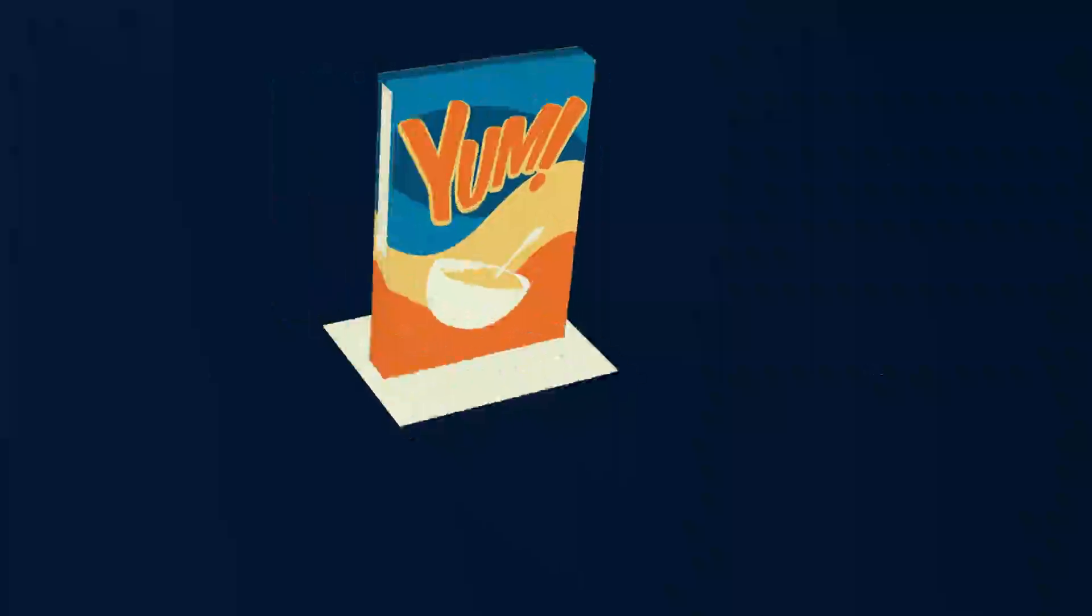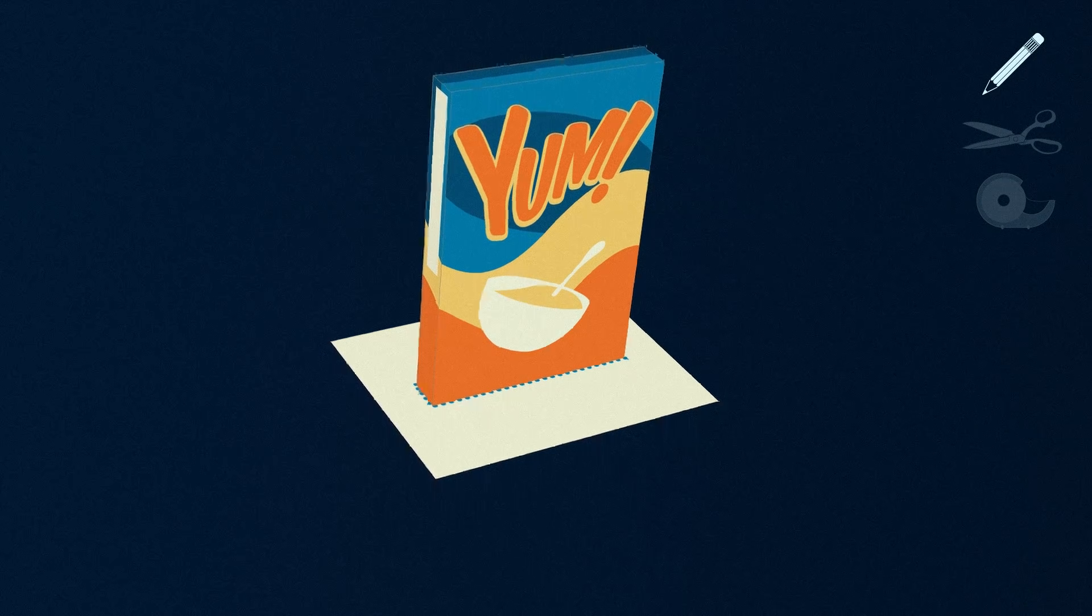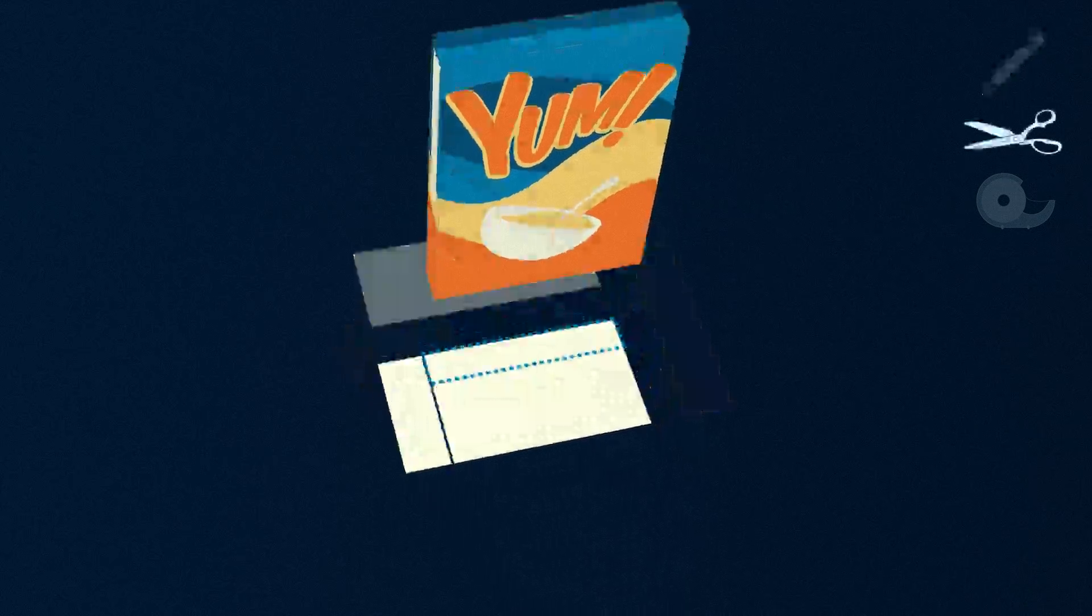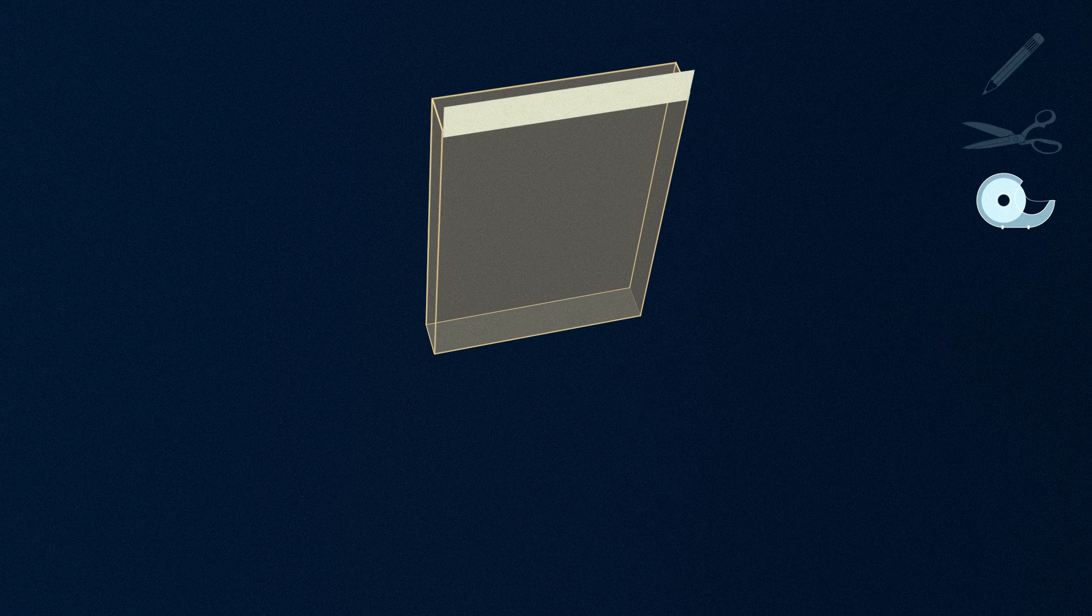Step 1: Trace the bottom of the cereal box on a piece of white paper and cut the paper out. Step 2: Tape the paper to the inside of the bottom of the box and seal the top.